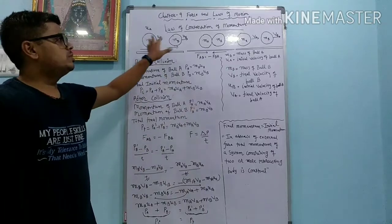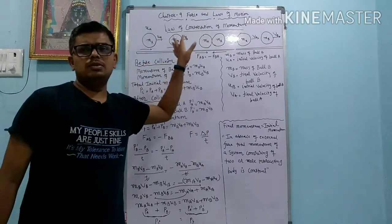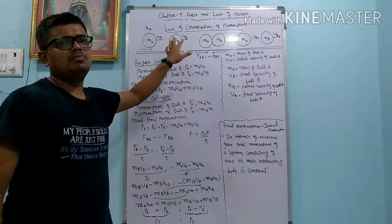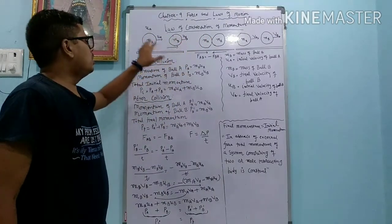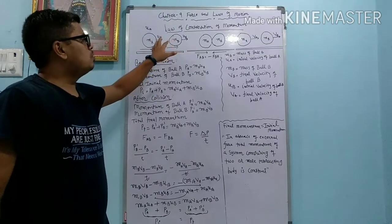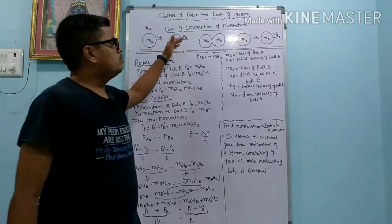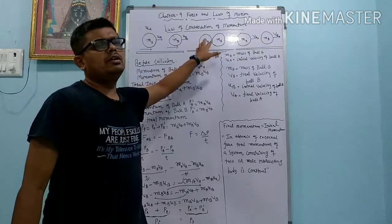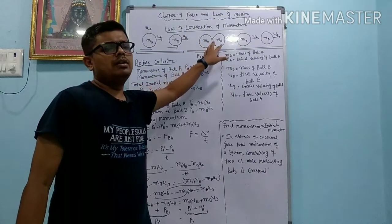Dear students, concentrate here. Two balls are there — ball A and ball B. Ball A velocity is more than ball B. So when they are moving in the linear direction, ball A and ball B collide.